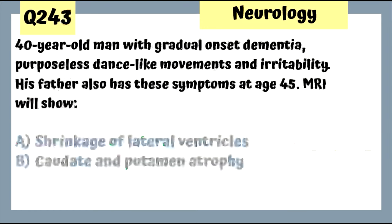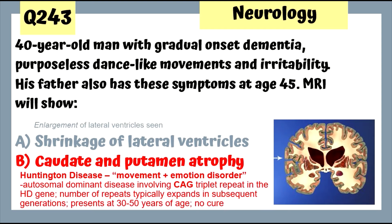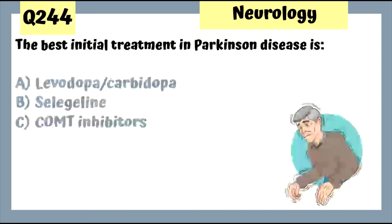Question 243: A 40-year-old man with gradual onset dementia, purposeless dance-like movements, and irritability — his father had similar symptoms at age 45. This is Huntington's disease. MRI will show caudate and putamen atrophy with enlargement of the lateral ventricles.